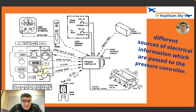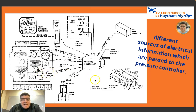From the pressurization panel we have auto one and auto two selections. If both auto modes fail, the pilot can manually control the outflow valve using either an AC or DC motor.